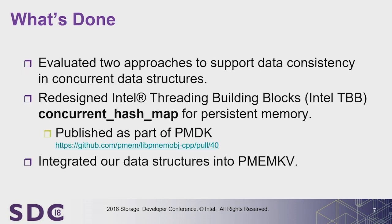What's already done — or rather, what we've already published, since we've done more but this is what's available in open source. We took Intel Threading Building Blocks library — an open-source library for multi-threaded programmers, similar to STL but providing concurrent data structures like concurrent hash map, concurrent vector, concurrent queue, and concurrent priority queue. We redesigned the concurrent hash map for persistent memory. The code is already on code review for PMDK and will be part of PMDK soon. We also integrated this data structure into PMKV to enable concurrency in that key-value storage.